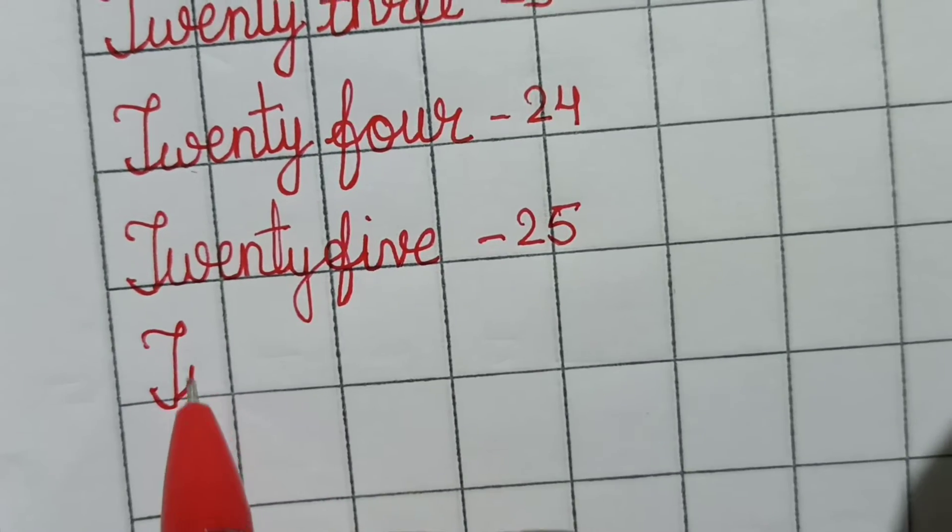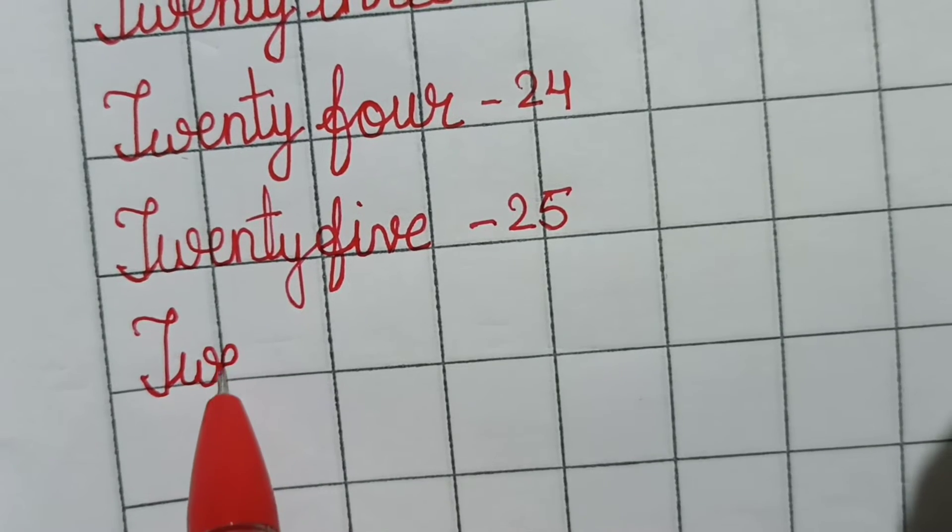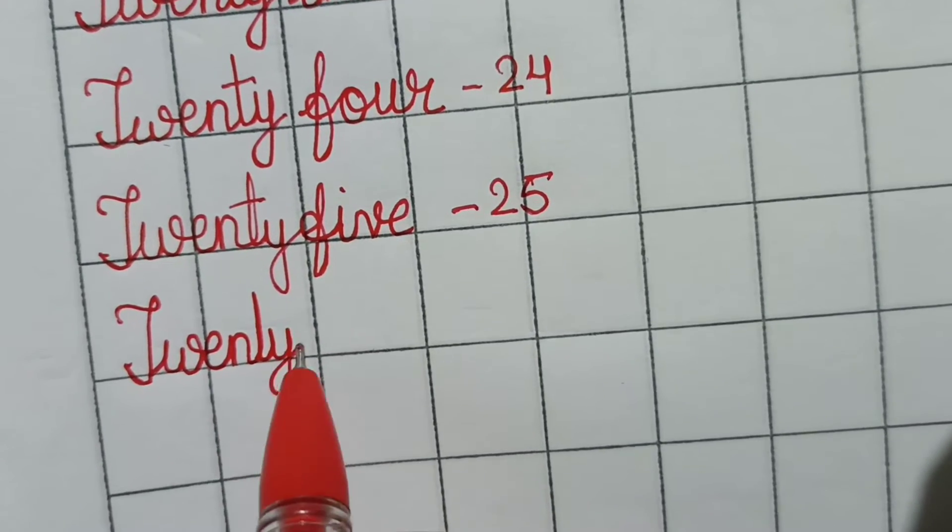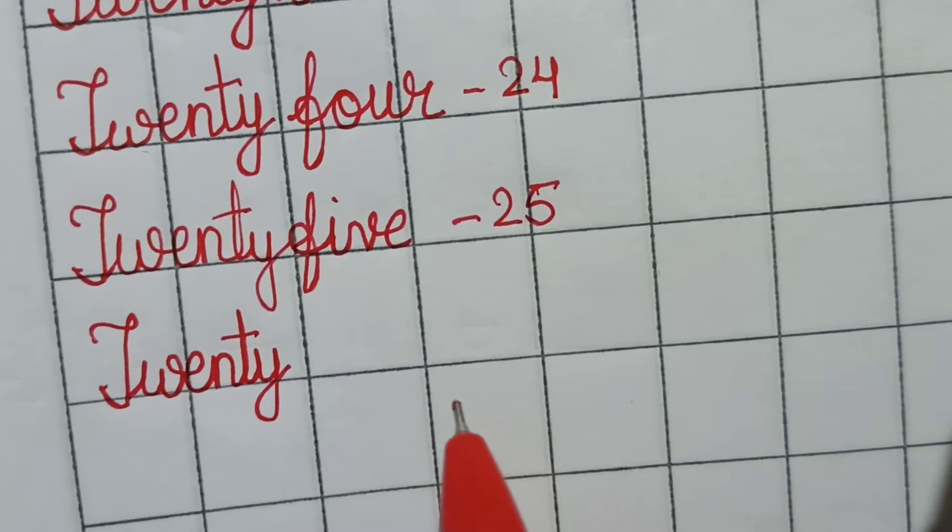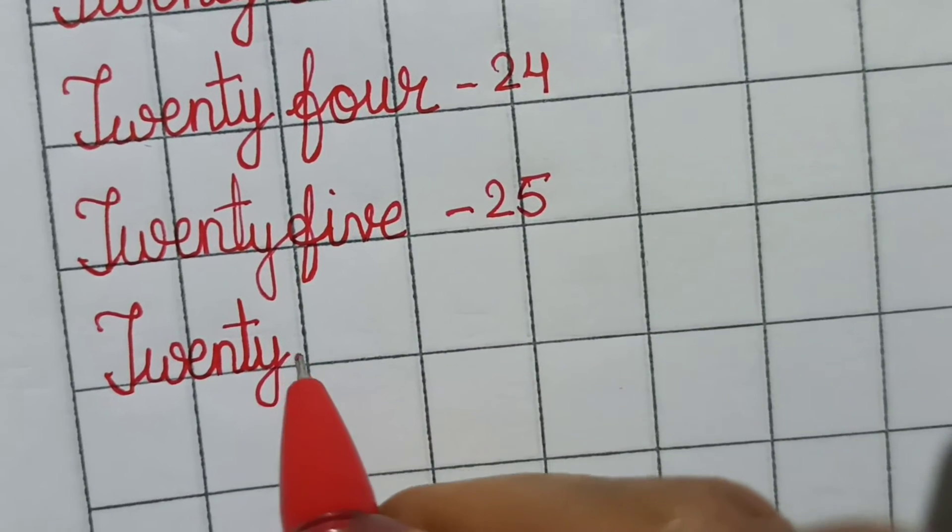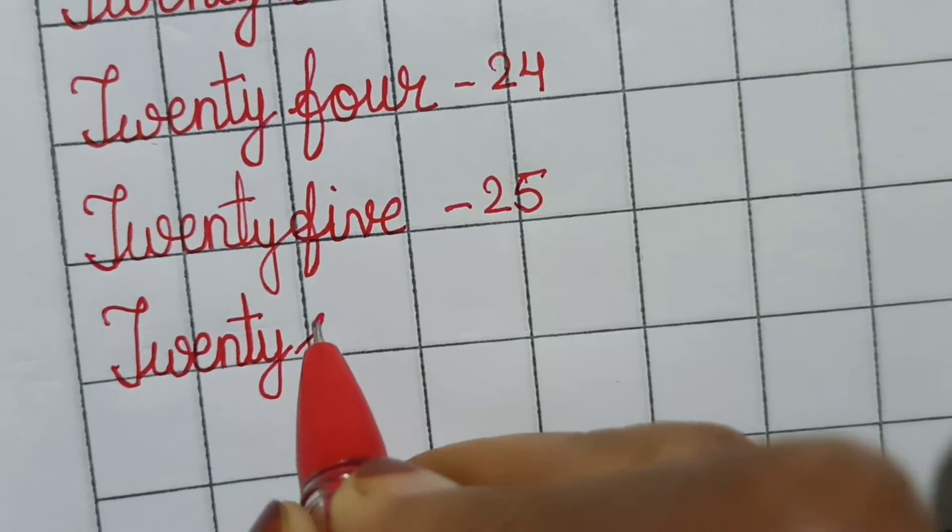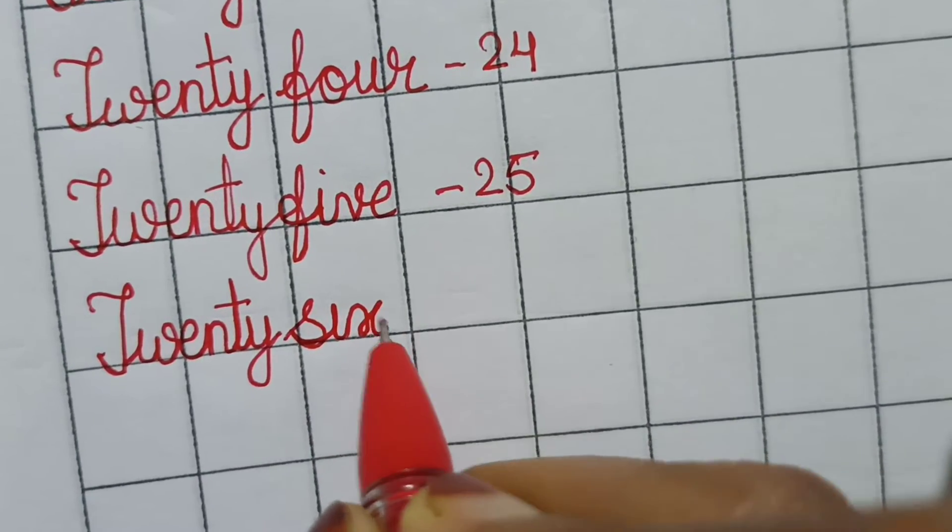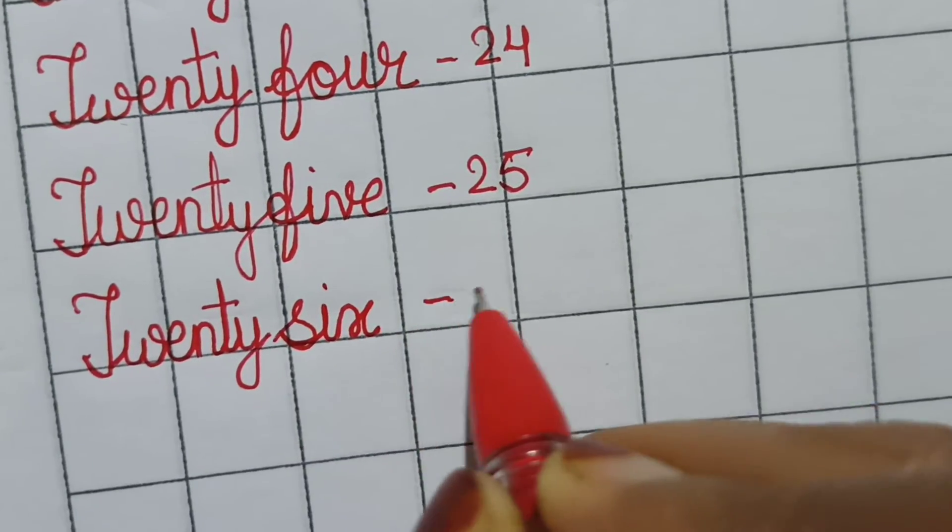T-W-E-N-T-Y, 20. Now we will write the spelling of 6. This is small s. I-X. That is 26.